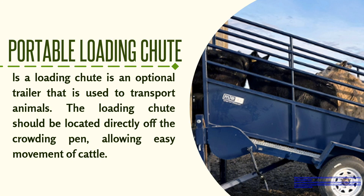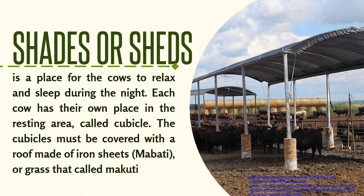The portable loading chute is an optional trailer used to transport animals. The loading chute should be located directly off the crowding pen, allowing easy movement of cattle. The shades or sheds provide a place for the cows to relax and sleep during the night. Each cow has their own place in the resting area called a cubicle. The cubicles must be covered with a roof made of iron sheets or grass, called makuti.